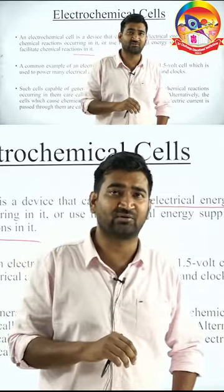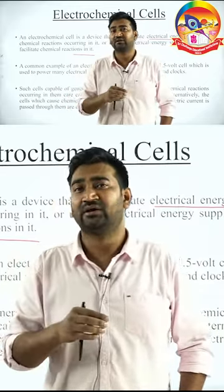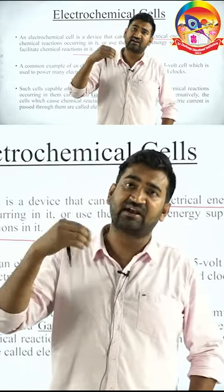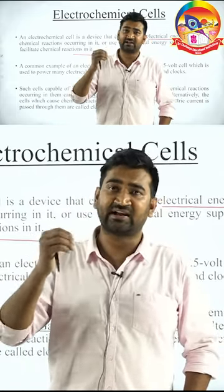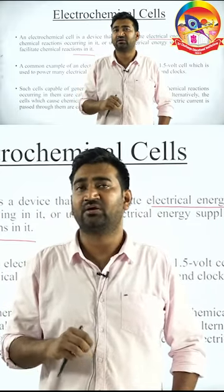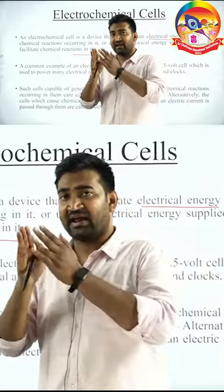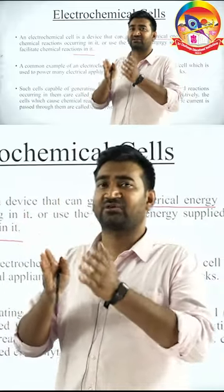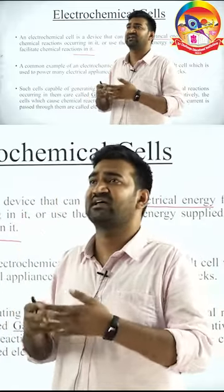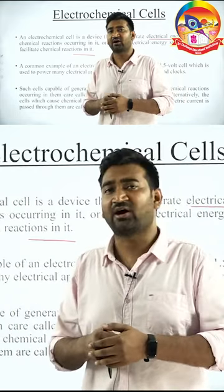There are two types of cells. One is called galvanic cells, where a chemical reaction converts to electrical energy. The second type is called electrolytic cells, where electricity is passed and then at the anode and cathode, some things are getting deposited and some gas is getting liberated — that is how things happen in these particular cells.